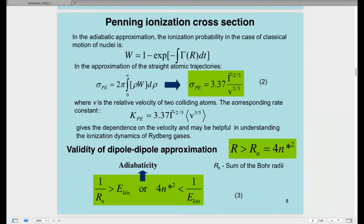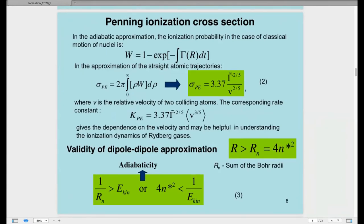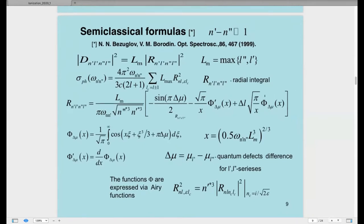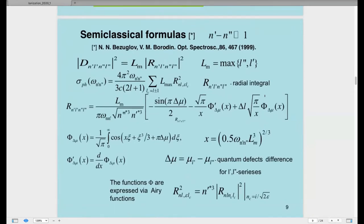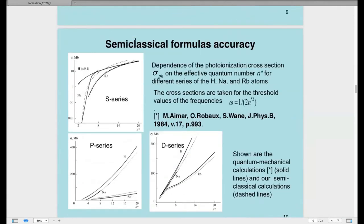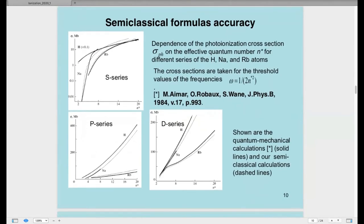using dipole-dipole approximation for large internuclear distances. Without using Schrodinger equations, we can compare semi-classical formulas accuracy here, and we see that quantum mechanical calculations solid lines and our semi-classical calculation dashed lines agree well for hydrogen, sodium and rubidium atoms.